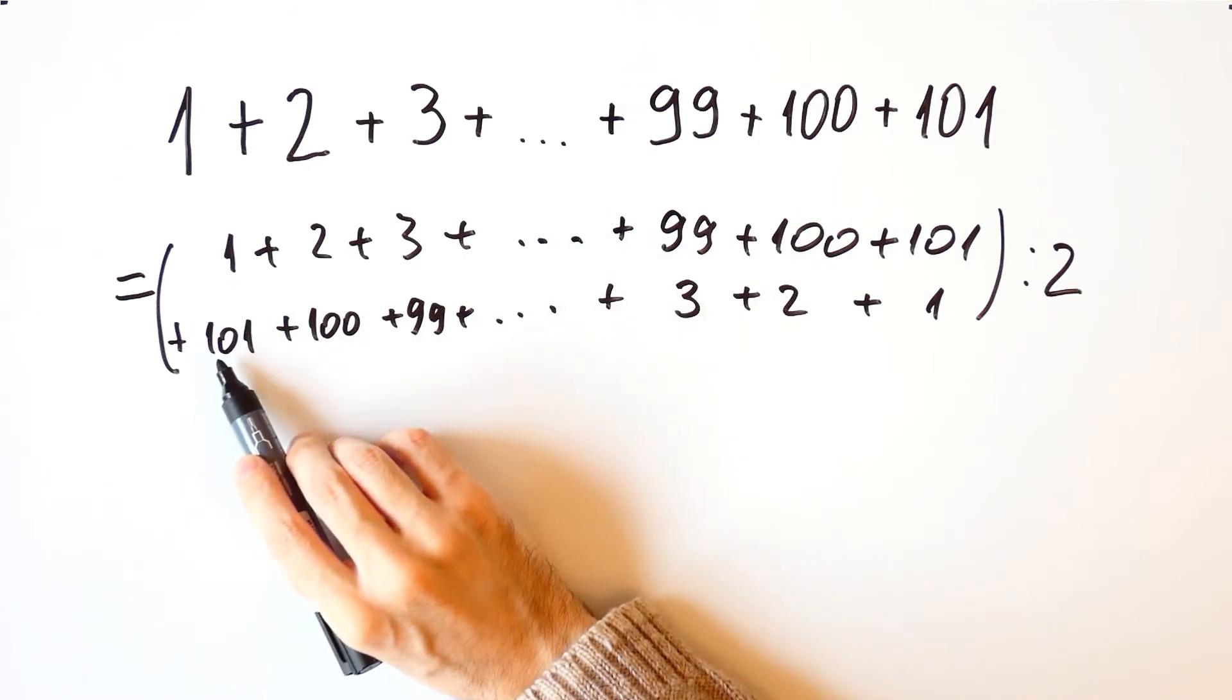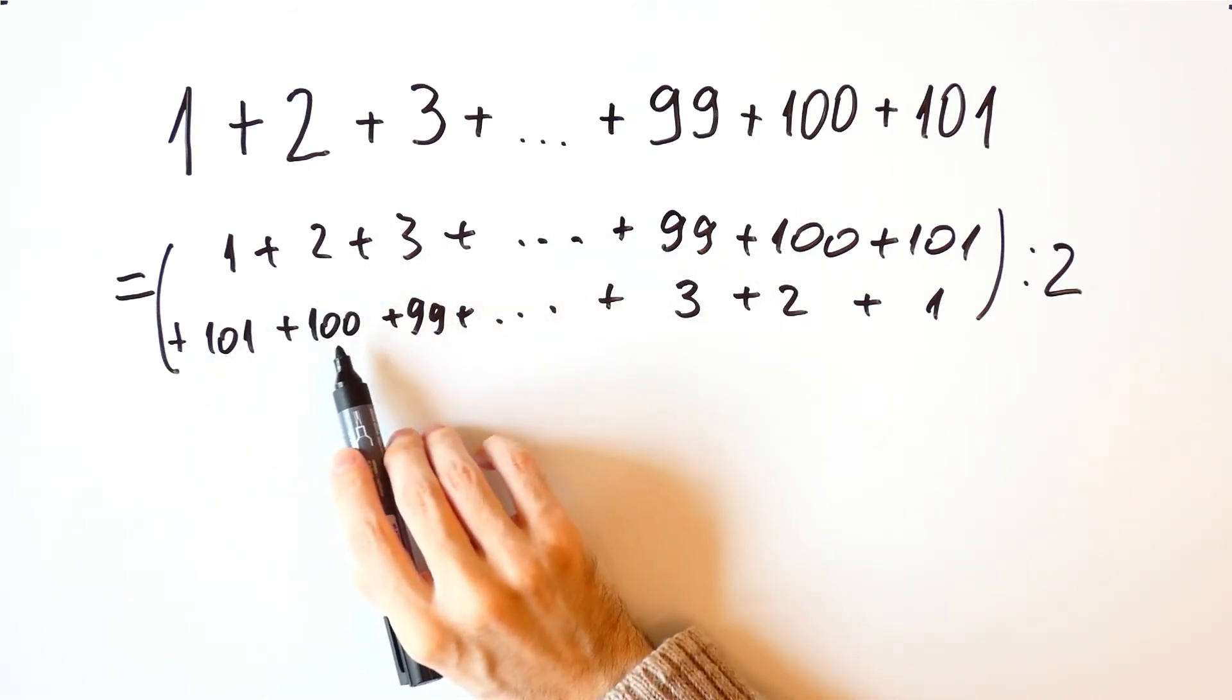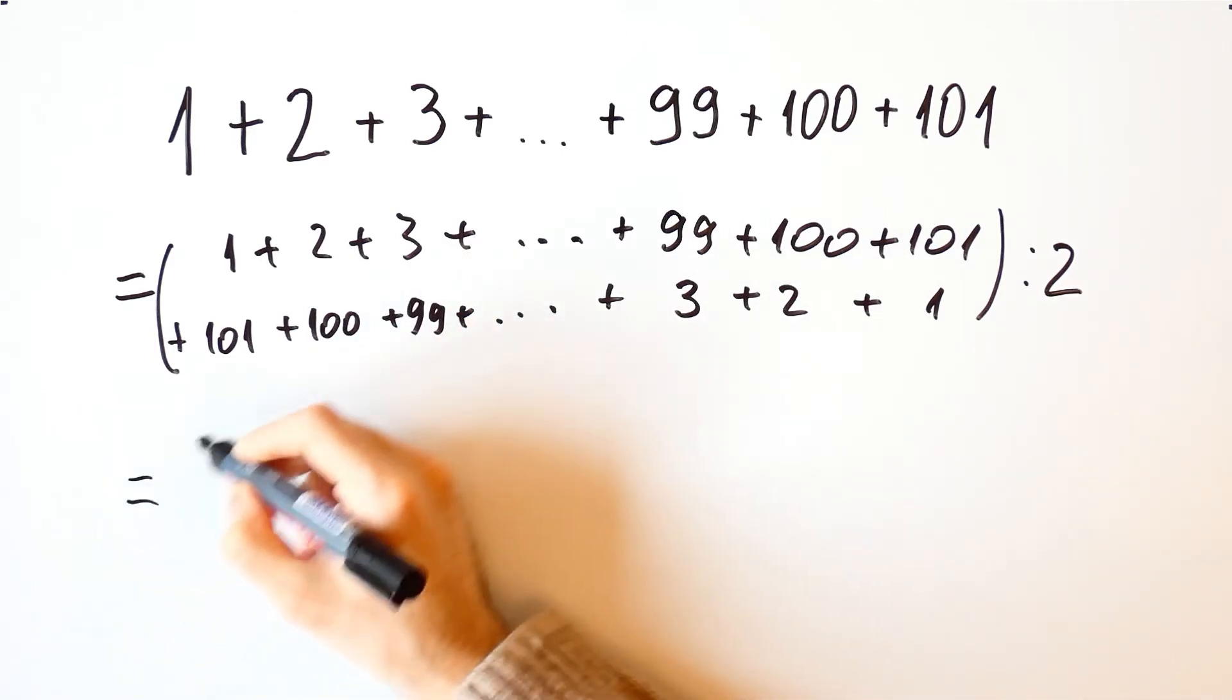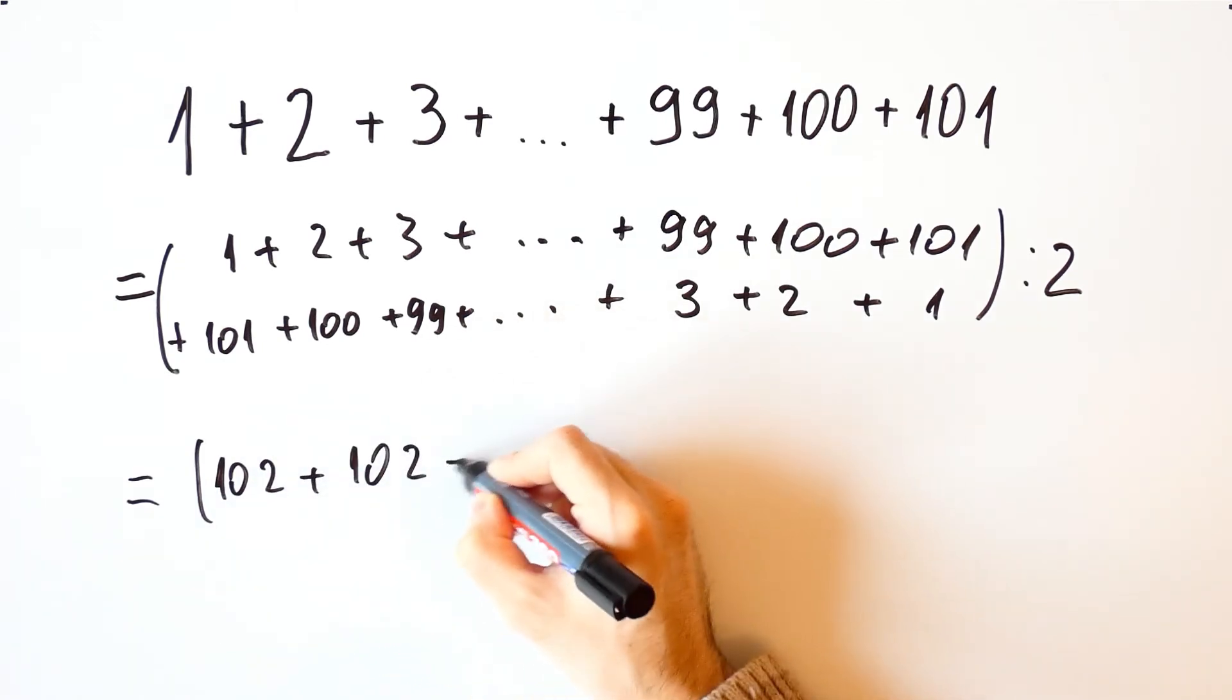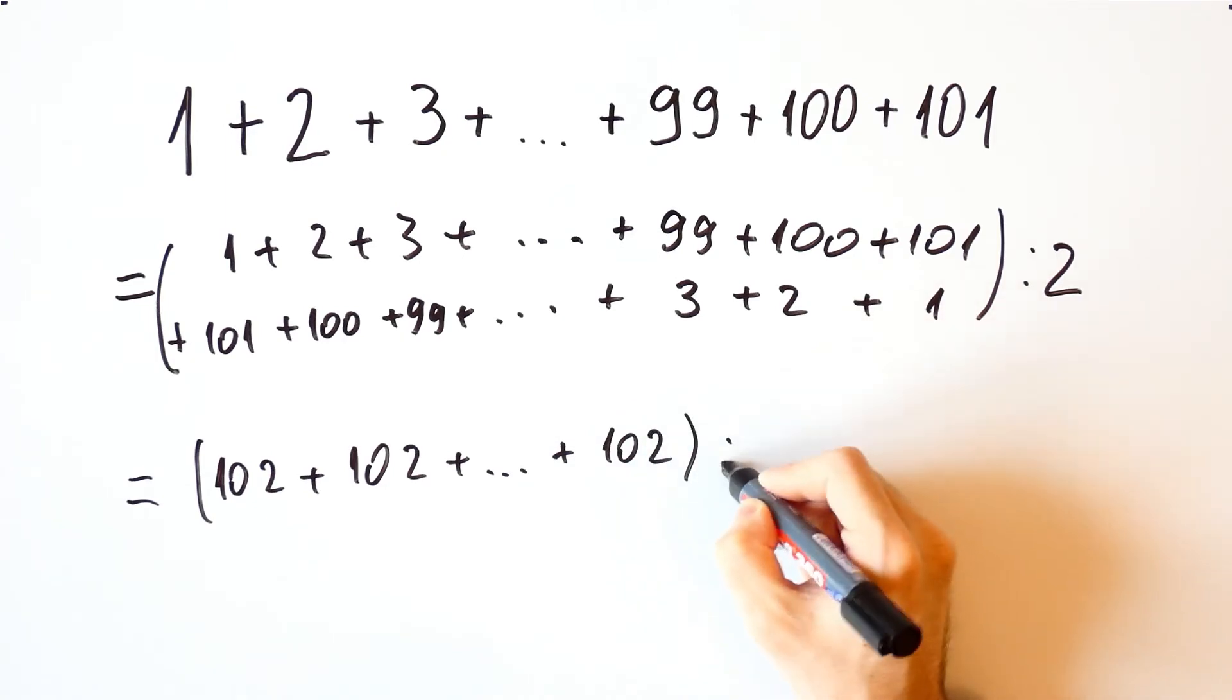Now, 1 plus 101 is equal to 102, 2 plus 100 is 102, 3 plus 99 is 102, so this is equal to 102 plus 102 plus 102 divided by 2.